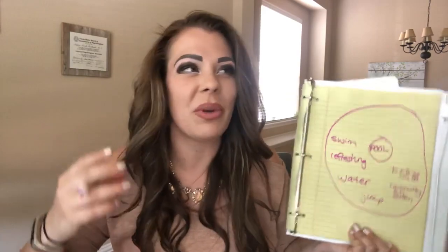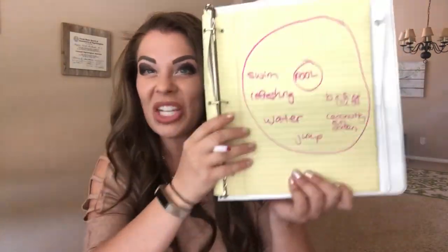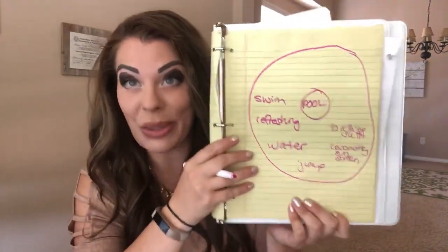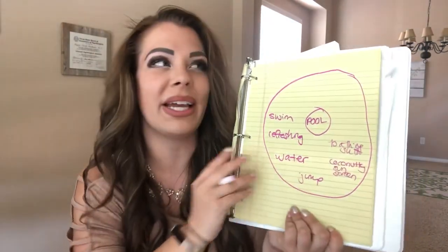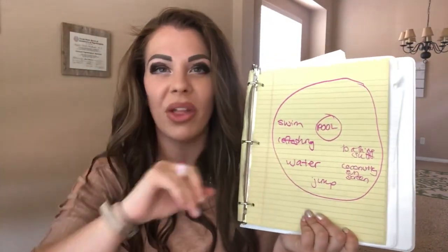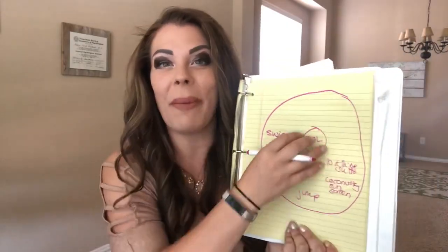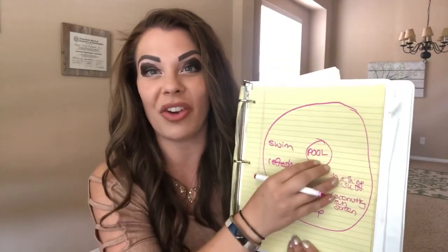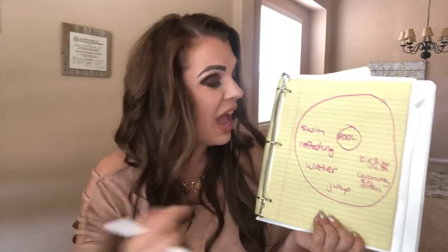This is exactly what a circle map does — it gets your brain going and pulls all of those related things that remind you of your theme or topic. So now when I go to write a poem about the pool, I have a bunch of really cool ideas.